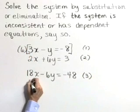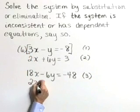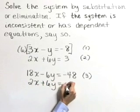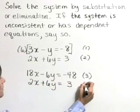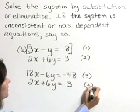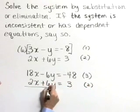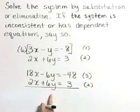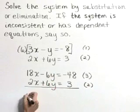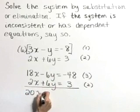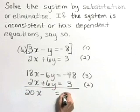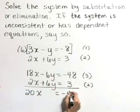Equation number 2 is 2x plus 6y is equal to 3. Let's add these equations together. The y variable eliminates.